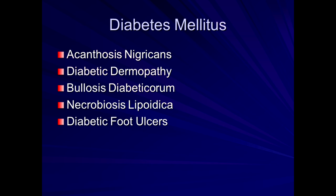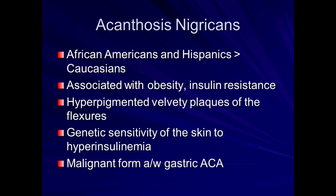For diabetes, the more common skin manifestations include acanthosis nigricans, diabetic dermopathy, bullosis diabeticorum, necrobiosis lipoidica, and diabetic foot ulcers. Acanthosis nigricans is more common in patients with darker skin — Hispanic or African-American descent — but not exclusive to those populations. It is commonly associated with obesity and insulin resistance. The rash consists of hyperpigmented, velvety, soft plaques of the flexural areas — arms, neck, skin folds — due to genetic sensitivity of the skin to hyperinsulinemia. There may also be a rare variant associated with gastric carcinoma.